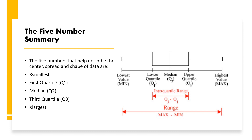The five number summary requires five values: the lowest value, Q1 (lower quartile), Q2 (median), Q3 (upper quartile), and the highest value in the data.